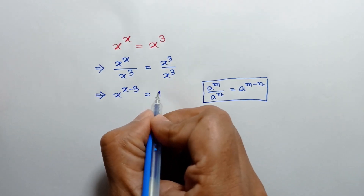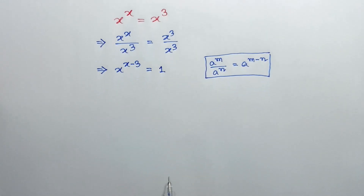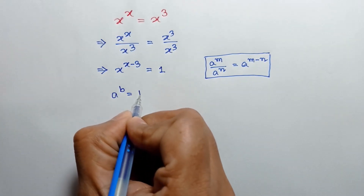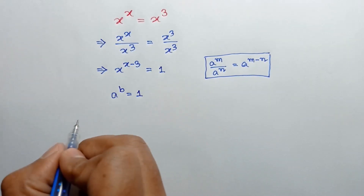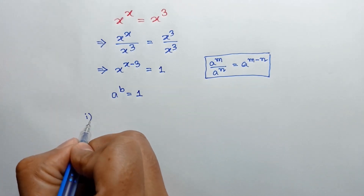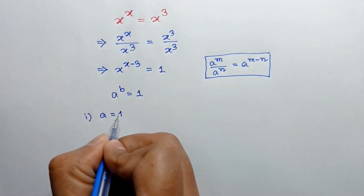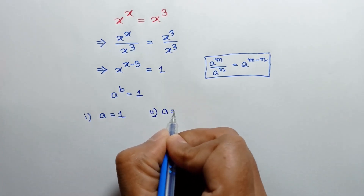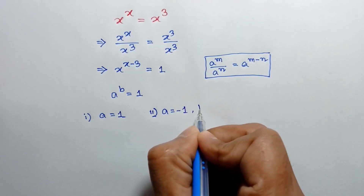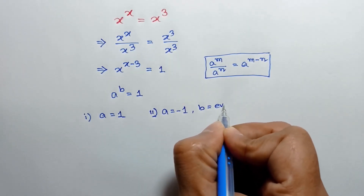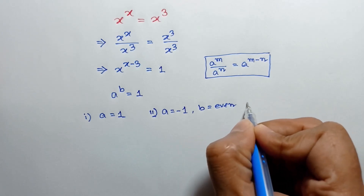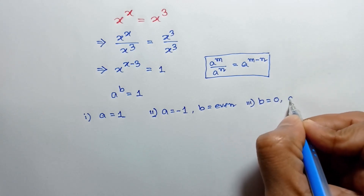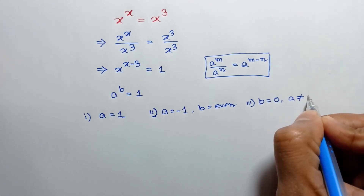Now the power of a number can be 1 in three cases. Case one: when a is equal to 1. Case two: when a is equal to negative one and b is even. Case three: b is equal to zero and a is not equal to zero.